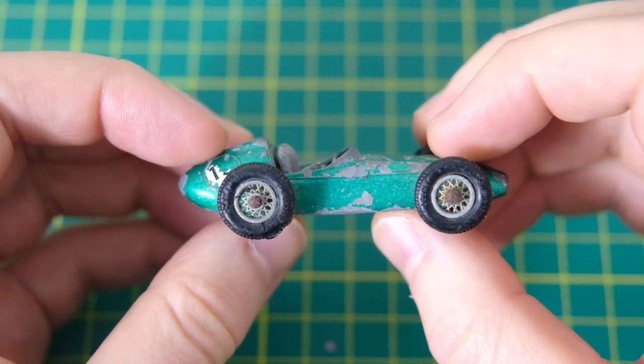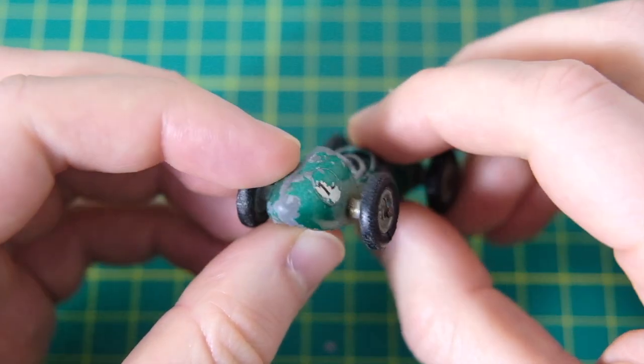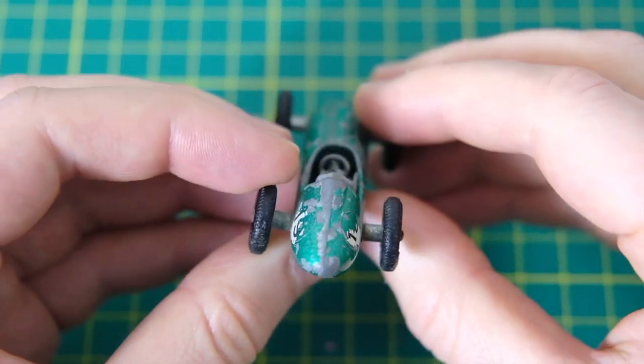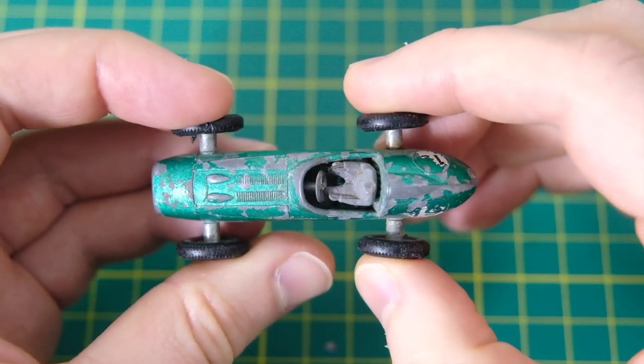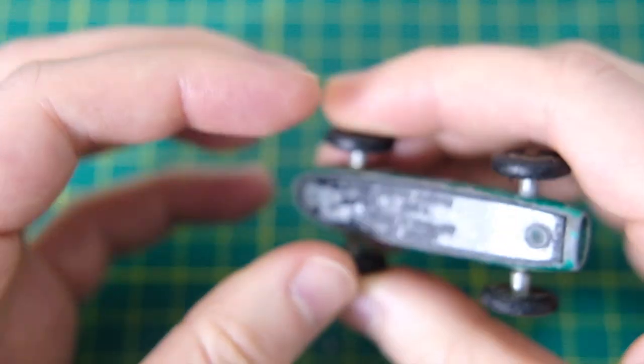Hello and welcome to Diecast Restos. My name is Jason and this is Lesney's Matchbox 19C Aston Martin DBR5. It featured in the range from 1962 to 1965.